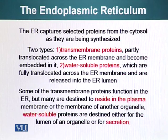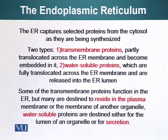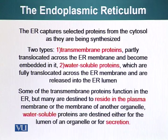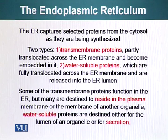The ER captures selected proteins from the cytosol as they are being synthesized. There are two types: transmembrane proteins, which are embedded in a membrane and have a transmembrane domain present in the hydrophobic part of the membrane — such as receptor proteins — and water-soluble proteins, which are fully translocated across the ER membrane and released into the ER lumen. In the secretory pathway, proteins that cells secrete are water-soluble and are injected into the lumen of the ER.